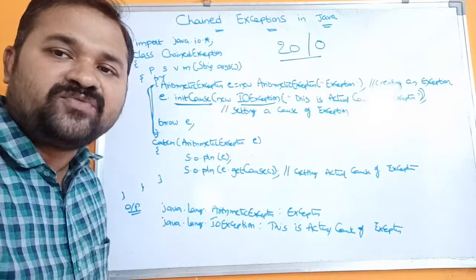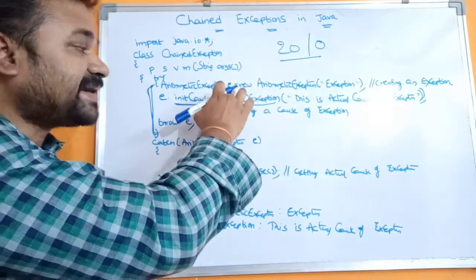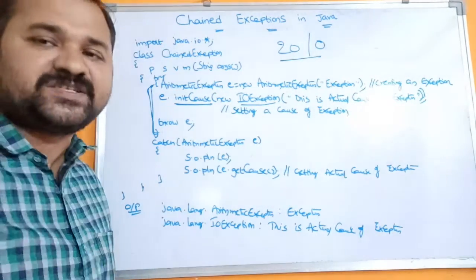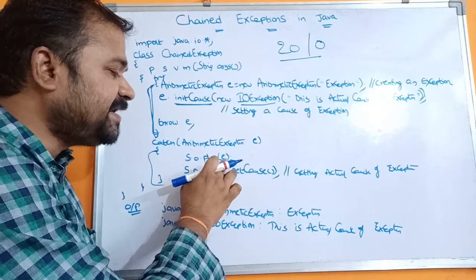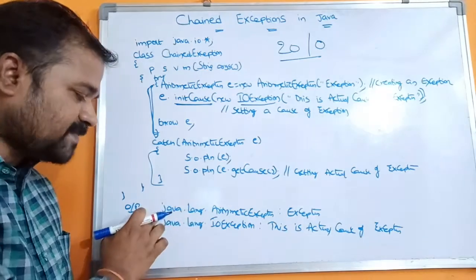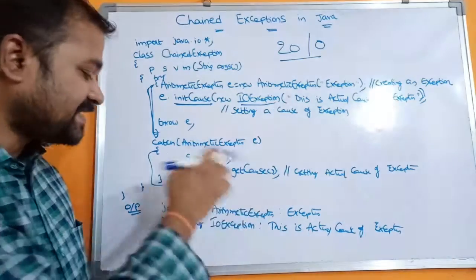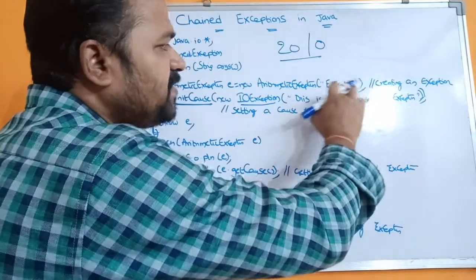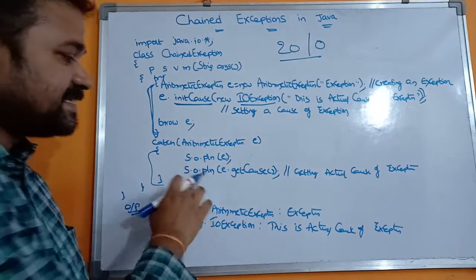Next, we have throw e. The throw keyword throws the corresponding exception object to the corresponding catch block. Here, e is an ArithmeticException, so the throw keyword throws the ArithmeticException object to the catch block that handles ArithmeticException. Inside the catch block, System.out.println(e) prints the ArithmeticException information: java.lang.ArithmeticException: exception.